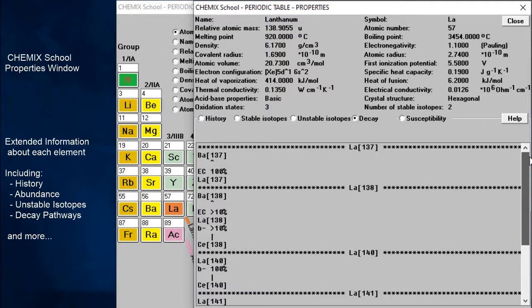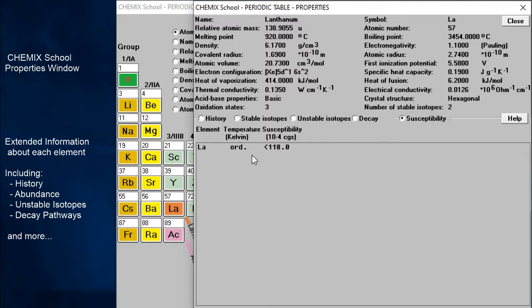The susceptibility push button gives us information about the isotopes, in what degree an element will become magnetized in an applied magnetic field.